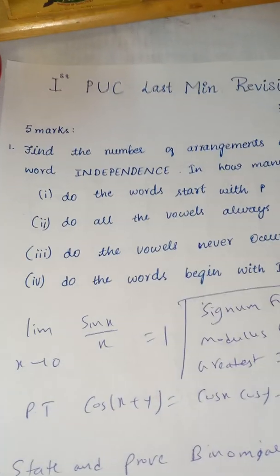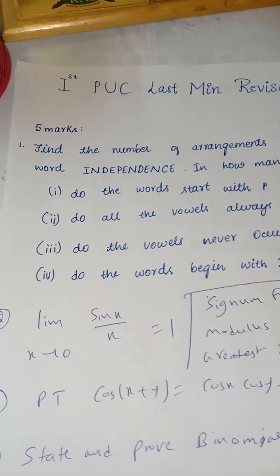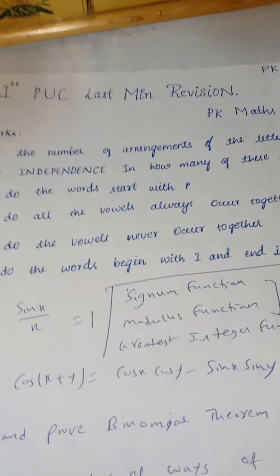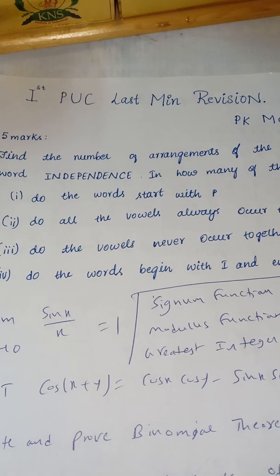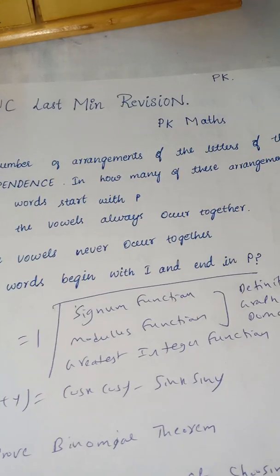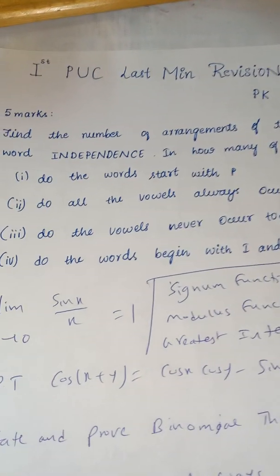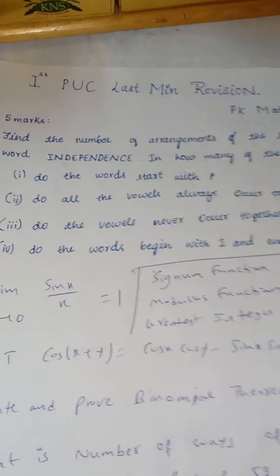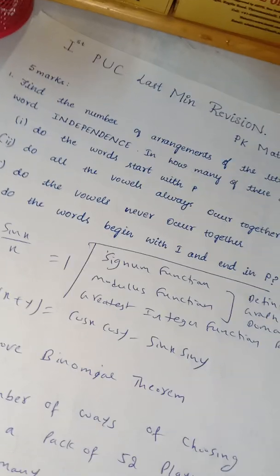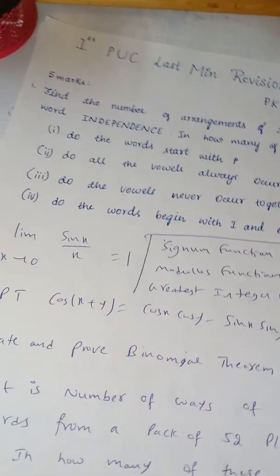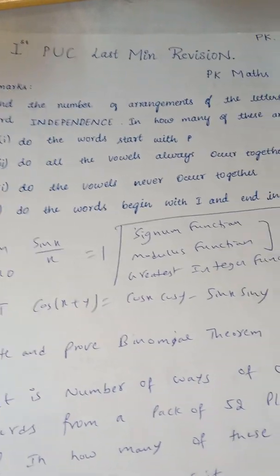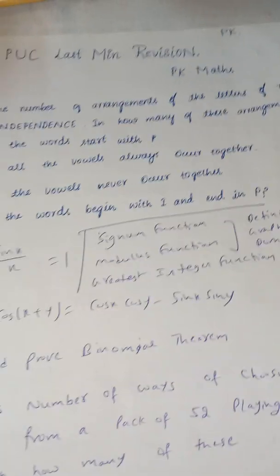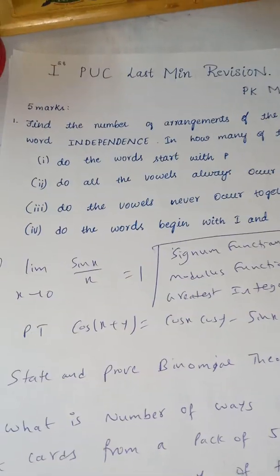The first question I am discussing with you is in permutation and combinations. Find the number of arrangements of the letters of the word INDEPENDENCE. In how many of these arrangements: (1) do the words start with P? (2) do all the vowels always occur together? (3) do the vowels never occur together? (4) do the words begin with I and end with P? This is a 5 mark question.